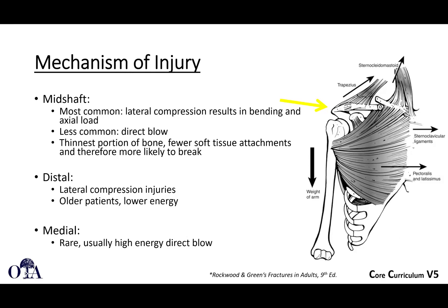The mechanism of injury for mid-shaft fractures is typically lateral compression resulting in bending and axial load — a fall directly onto the shoulder, as shown with the yellow arrow here. The thinnest portion of bone in the mid-shaft typically fractures as it has fewer soft tissue attachments. Distal fractures also happen from a fall, sometimes in older patients with lower energy injuries. Medial fractures are fairly rare and usually result from a high-energy direct blow to that area.